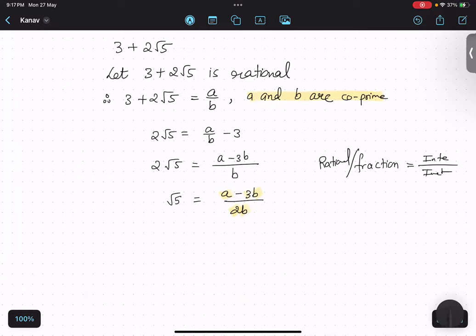So we will write that a, b, 3 and 2 are integers. Therefore, a minus 3b upon 2b is a rational number.